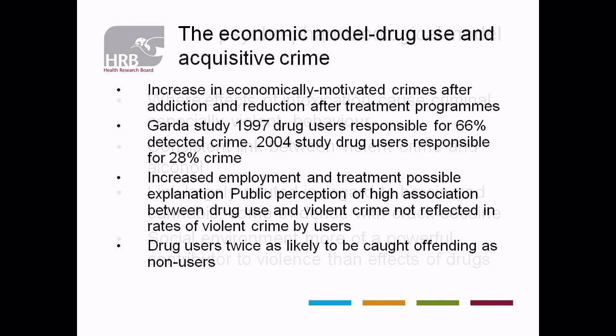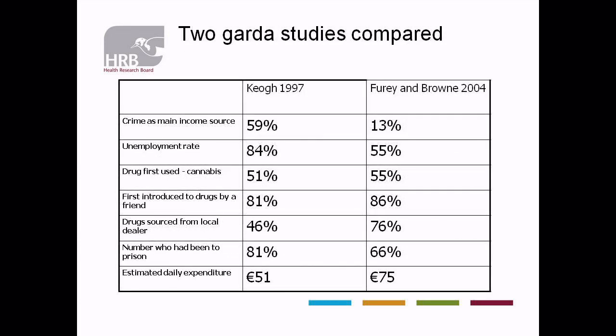The second important link is what we refer to as the economic compulsive, or acquisitive model — where people are committing crimes to feed their habit. This has been proven in international and Irish research: we have seen an increase in economically motivated crimes after addiction, after people become dependent on drugs, and when they are in an effective, well-resourced treatment programme, for example methadone maintenance with other supports, we have seen a reduction in offending behaviour. That proves from the treatment side a clear connection between economically motivated crimes and addiction. An increase in employment and the availability of treatment has seen a very large reduction in economically motivated crimes here in Ireland.